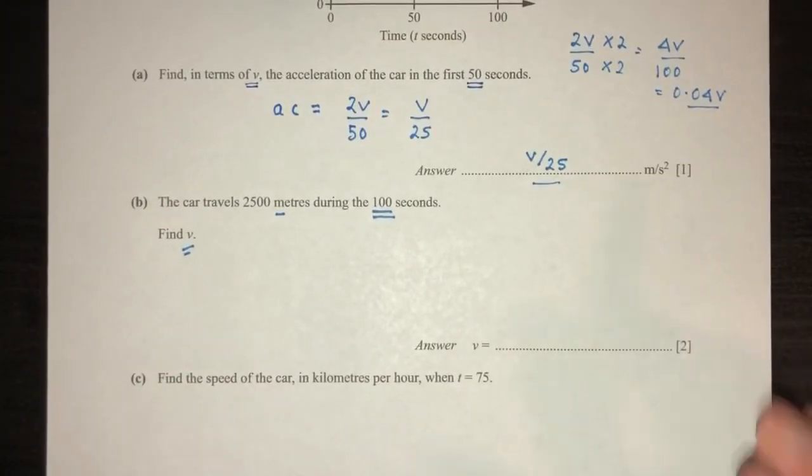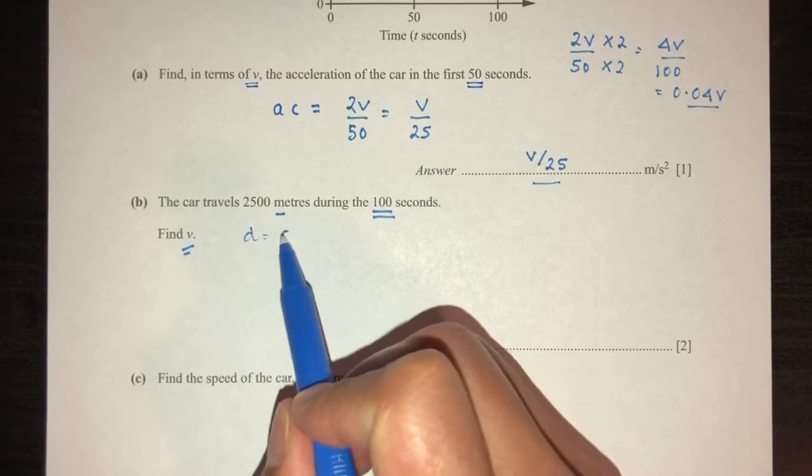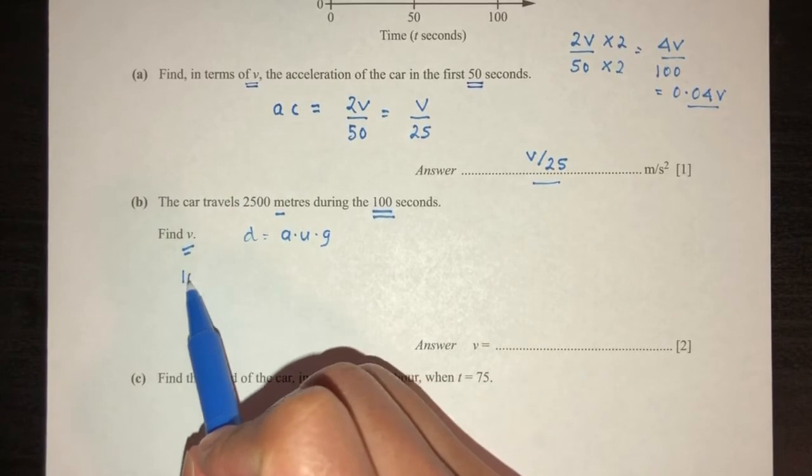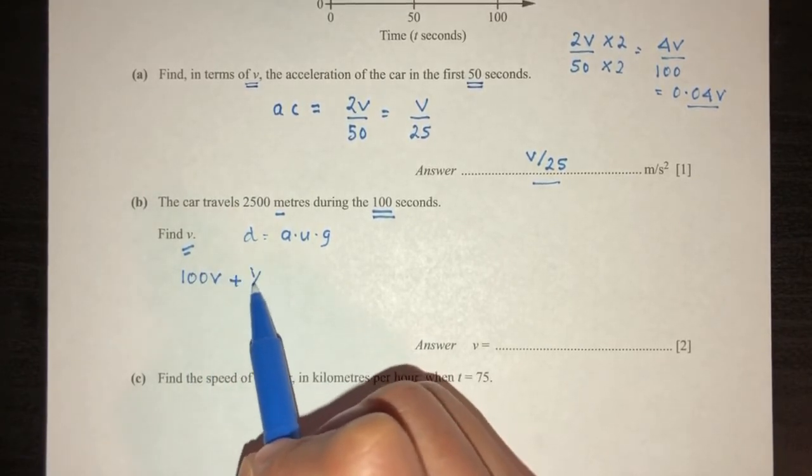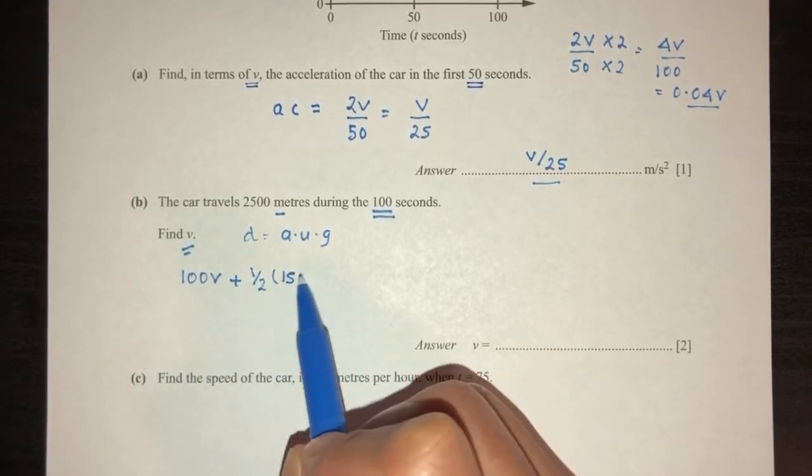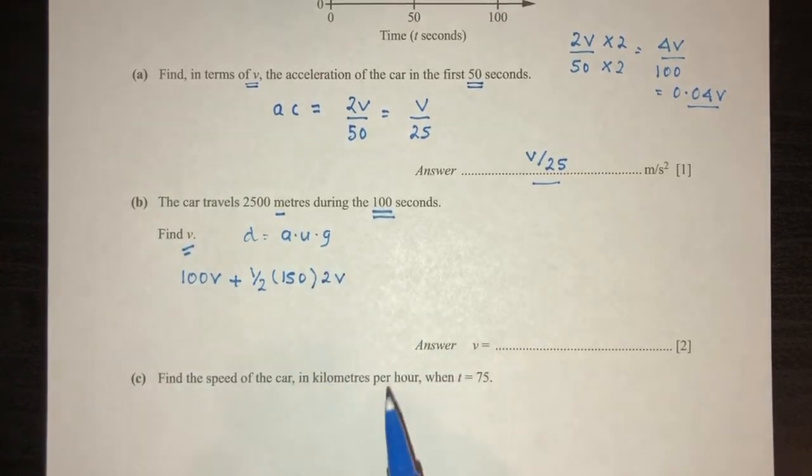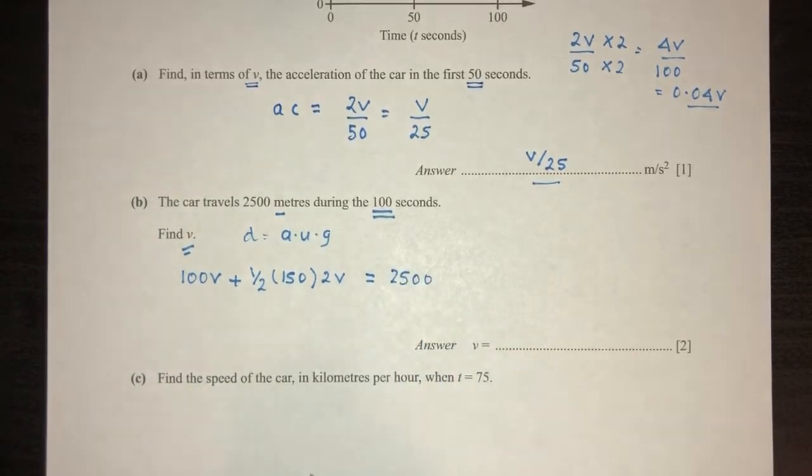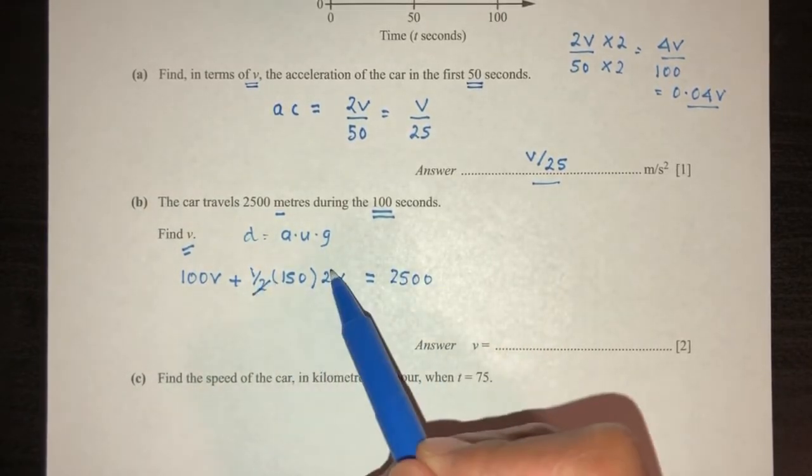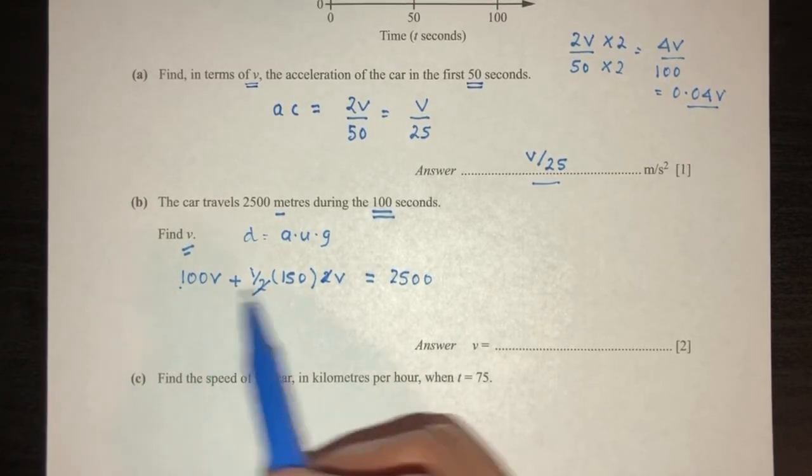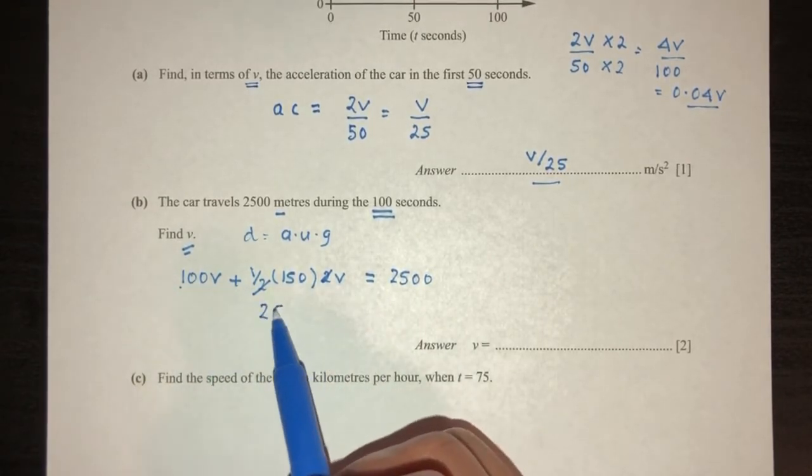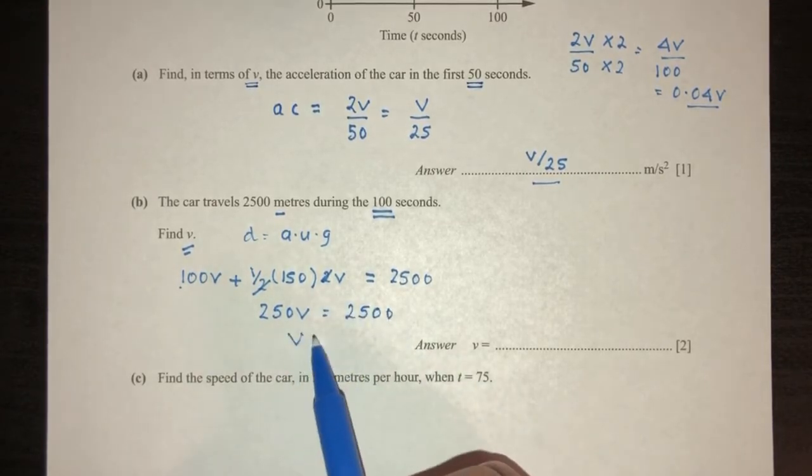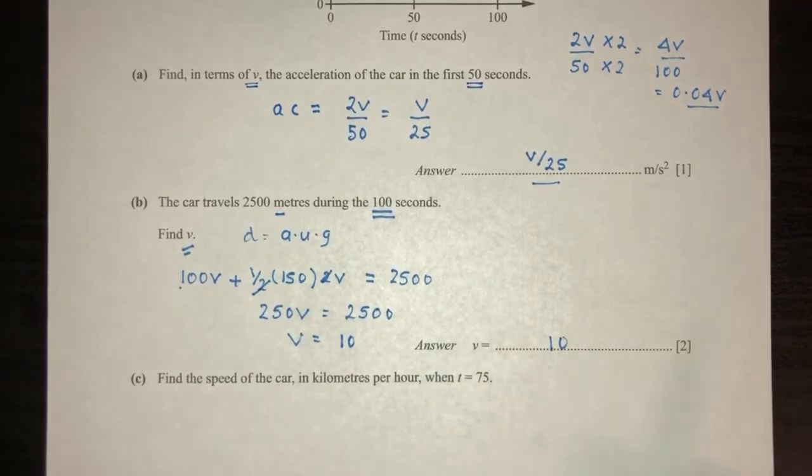So let's rewrite this down here. Distance traveled is equal to area under graph, and from my graph I can see we have 100V for the rectangle, plus half of 150 times 2V for the trapezium, and that should give you this value, which is 2500. Now we can simplify. 2, 2 goes away. Now we have 100V plus 150V. That should give you 250V is equal to 2500. Now V is equal to 10. That is your value of V.